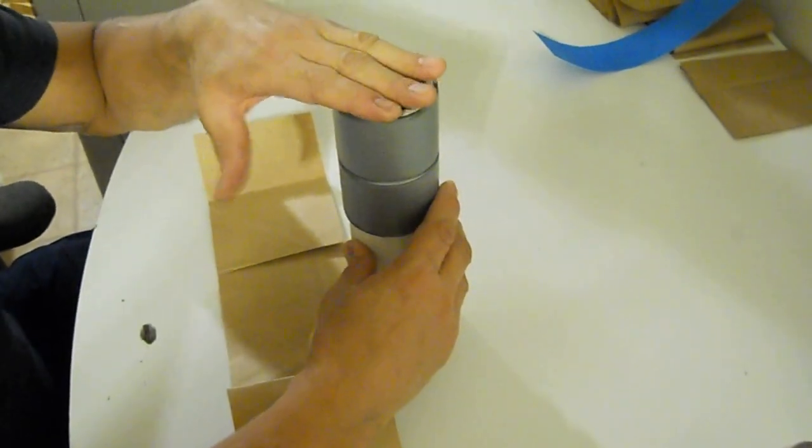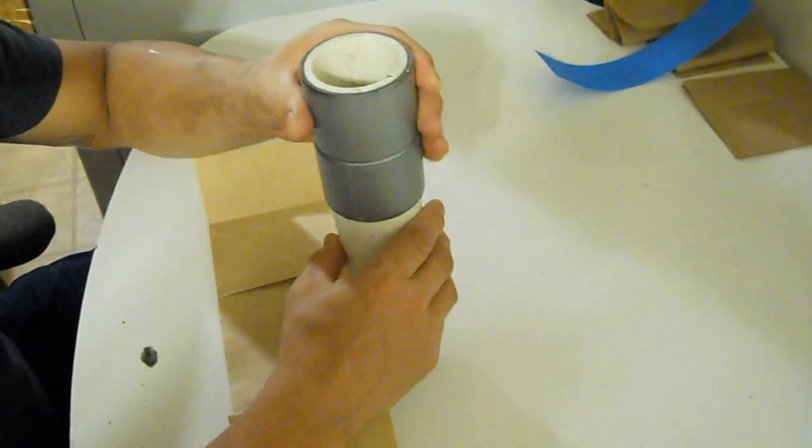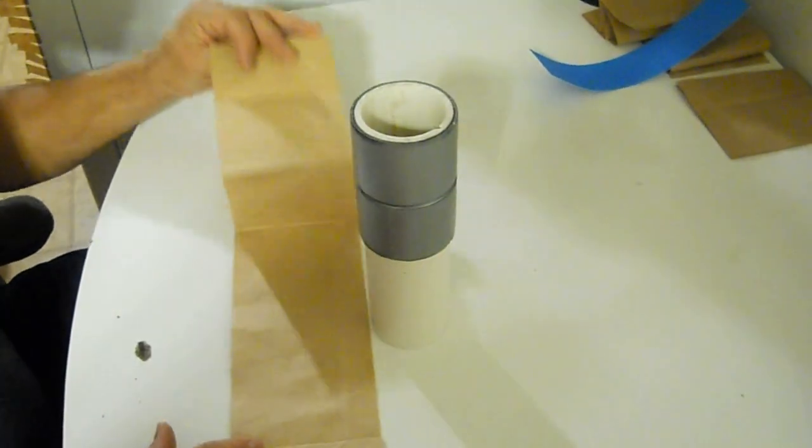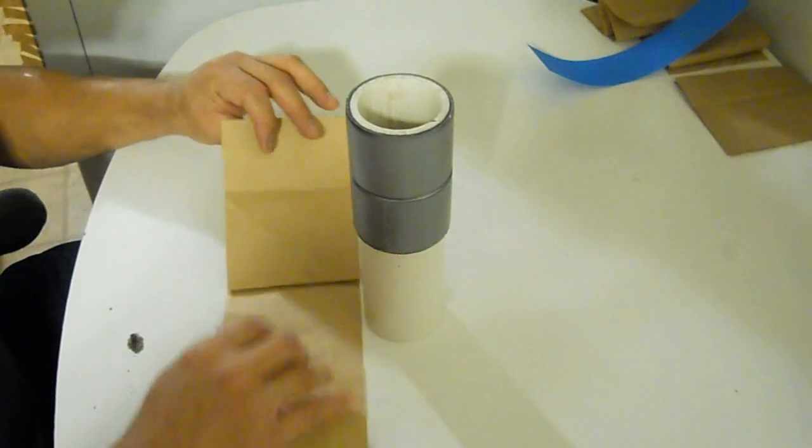This is a 3 inch canister shell. This is a 2 and a half inch case warmer. This is 4 wraps of 70 pound craft paper.